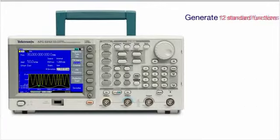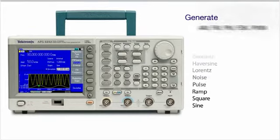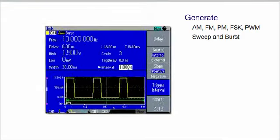Choose from 12 standard functions to generate the signal you need. Then apply common modulation types to your signal. Or you can choose to sweep or burst your signal. You can even add impairments like noise.